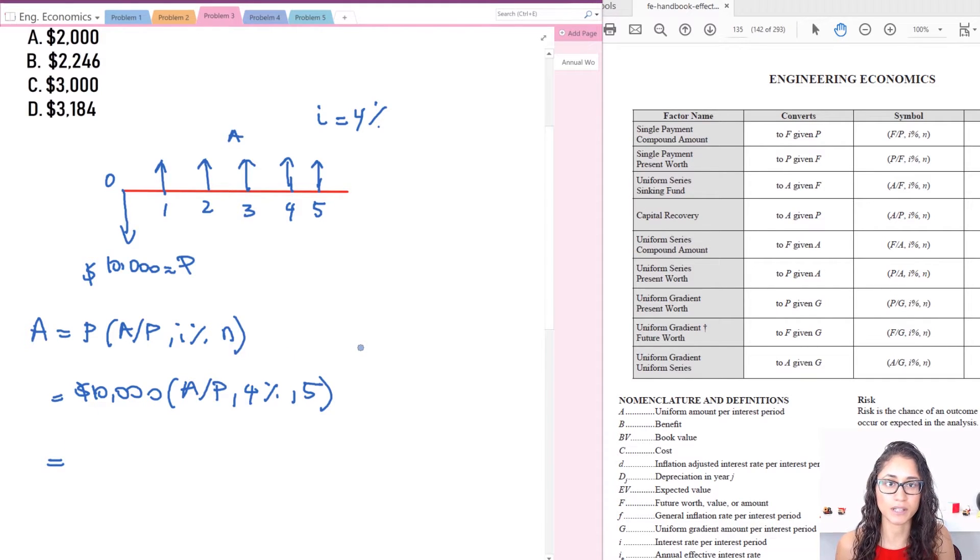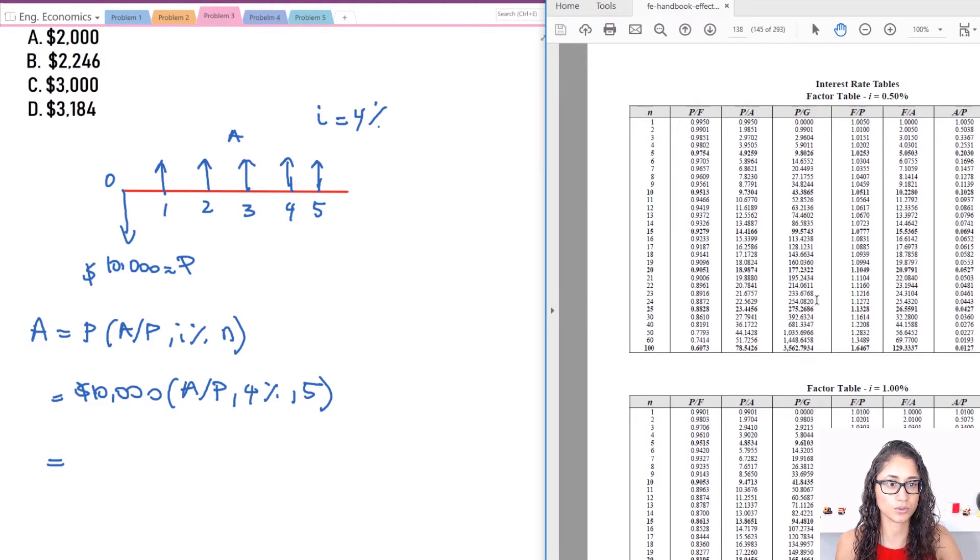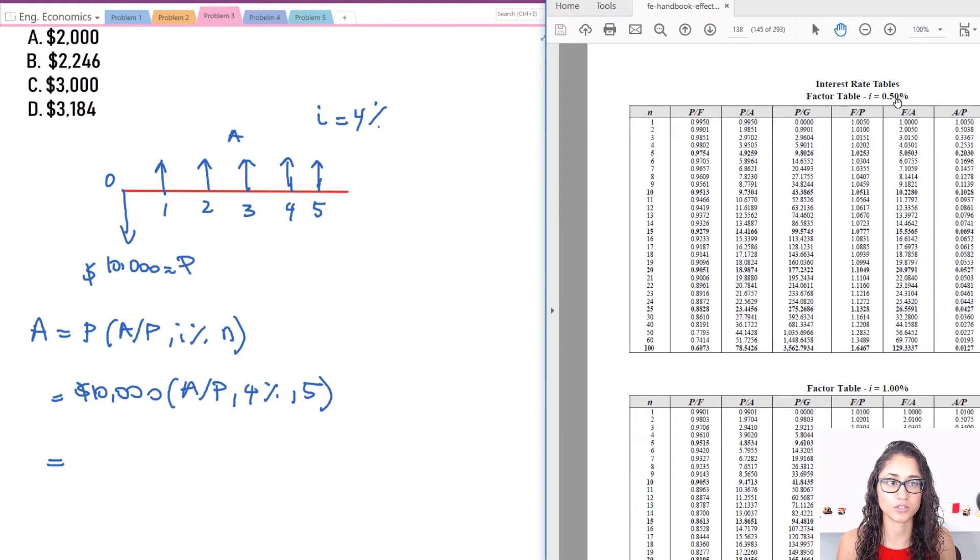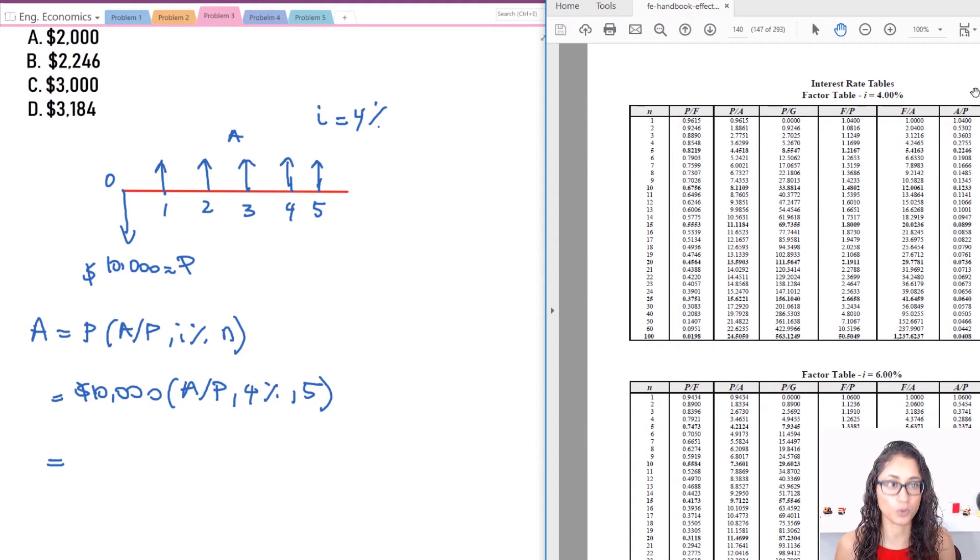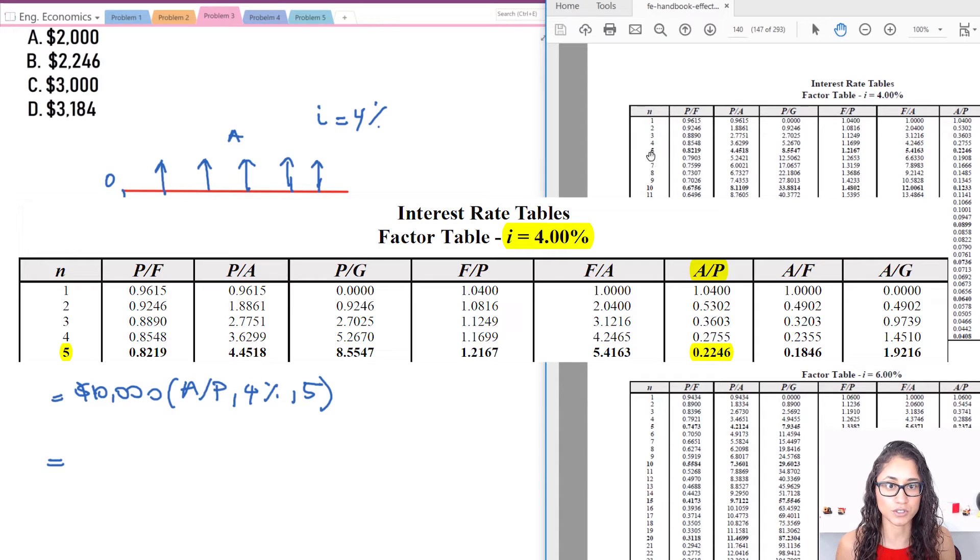So the next step is we're going to use tables. So here we have I is 0.5, I have 1, so I can't use either of these. I'm looking for I is equal to 4 percent. So that's the one we need. N, this is your number of years, this is 5, and we're looking for A to P.